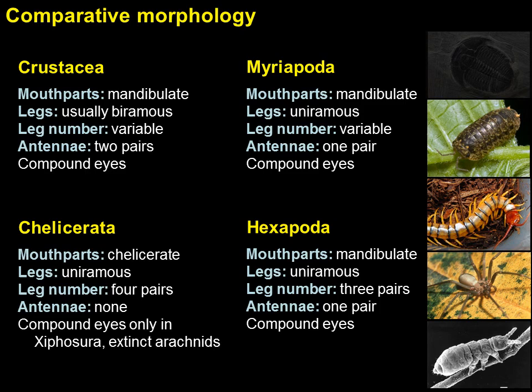To review the characteristics of the four living groups of arthropods: all are mandibulate except for the unique Chelicerata with their pair of hinged mouthparts. Legs are usually biramous in crustaceans and uniramous in other groups. The number of legs is usually four pairs in chelicerates, three pairs in hexapods, and variable in crustaceans and myriapods. Crustaceans typically have two pairs of antennae, one pair in myriapods and hexapods, and none in chelicerates. Crustaceans, myriapods, and hexapods typically have compound eyes, but compound eyes in chelicerates are limited to horseshoe crabs, the extinct eurypterids, and some fossil scorpions.